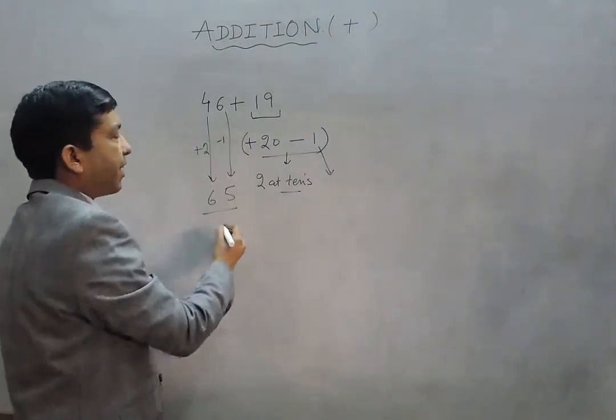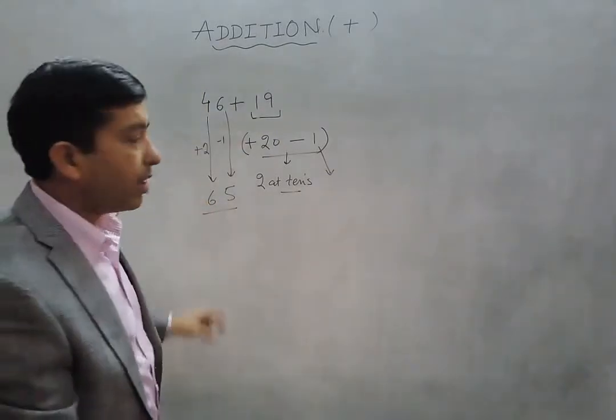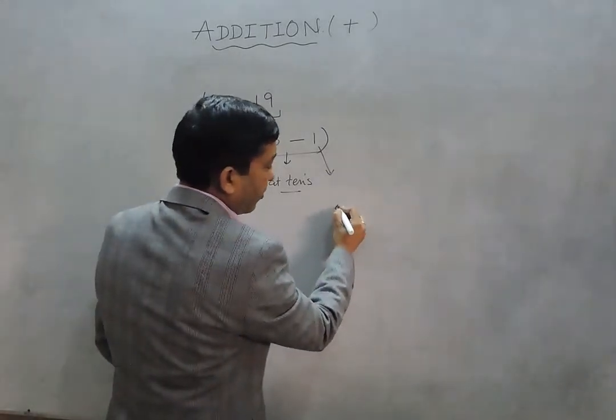So it becomes 65. 46 plus 19 equals 65. Suppose another example: 54 addition to 19.